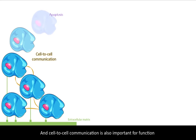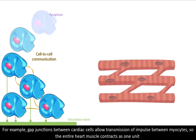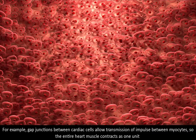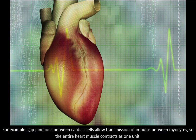Cell-to-cell communication is also important for function. For example, gap junctions between cardiac cells allow transmission of impulse between myocytes, so the entire heart muscle contracts as one unit.